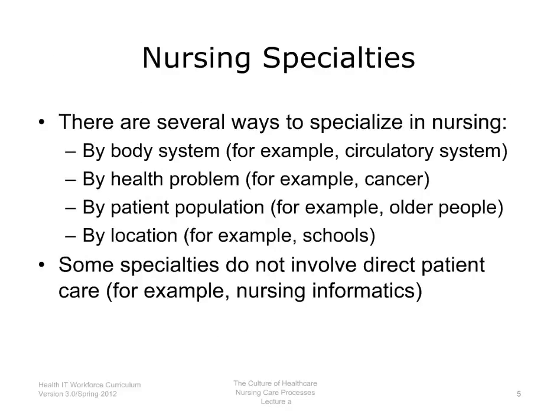Like many other health care professionals, some nurses specialize in one or more areas of medicine. There are several ways to specialize in nursing. A nurse can focus on treating certain body systems, such as the circulatory system. A nurse can focus on treating certain health problems, such as cancer. A nurse can focus on treating certain patient populations, such as children or the elderly. Or a nurse can work in a certain type of location, such as schools or patients' homes.